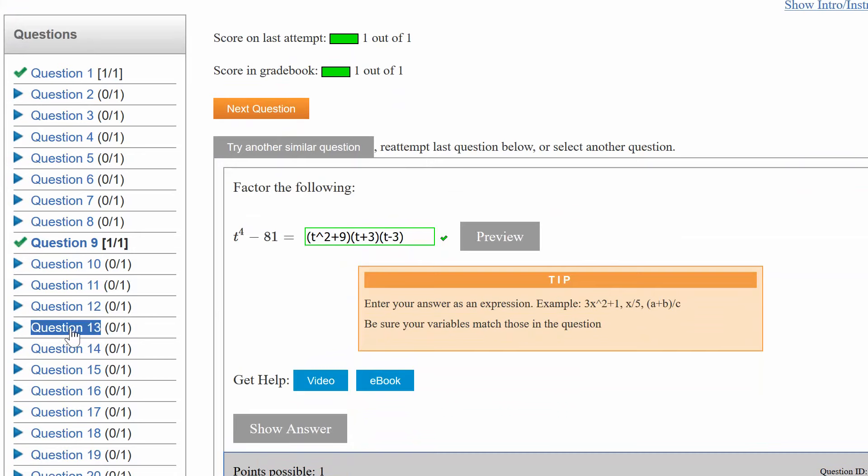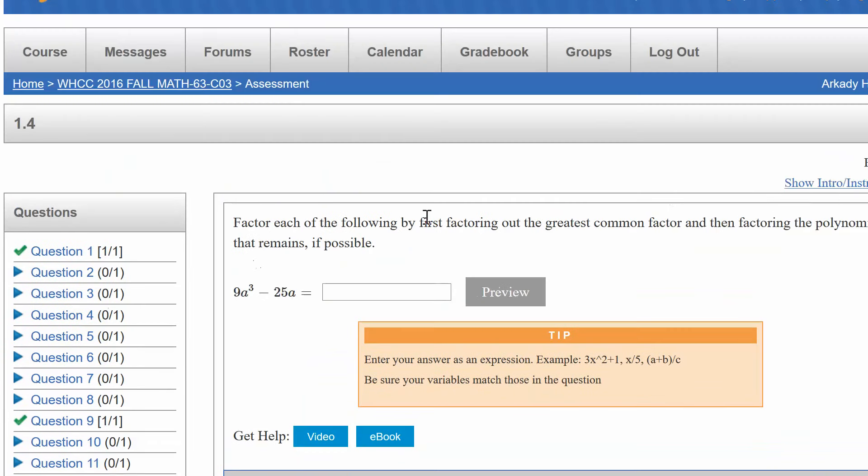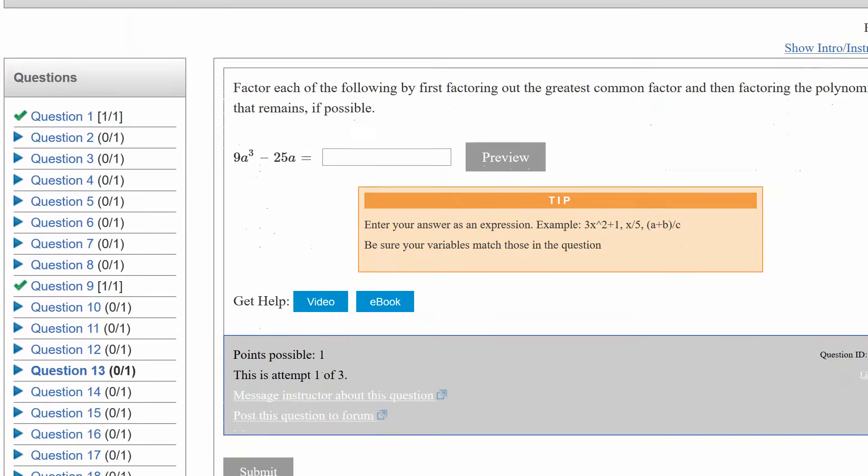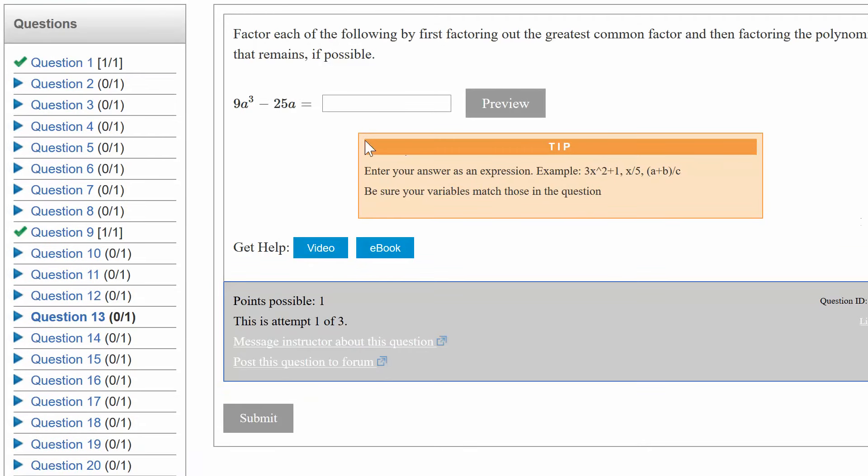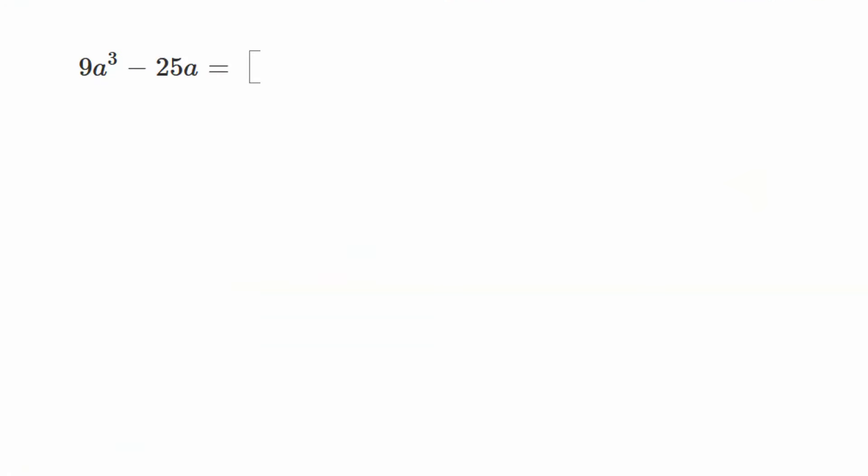Number 13. Your problem could be a little bit different from mine, but it's really the same process. So 9a cubed minus 25a. I have to figure out how to simplify this. Well, first thing I notice is that I have an a cubed and I have another a over here. I have an a in common in both these terms.